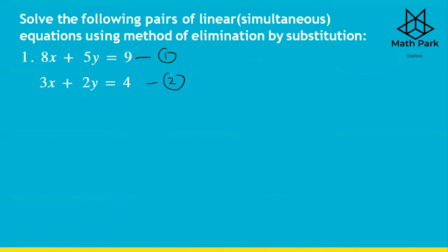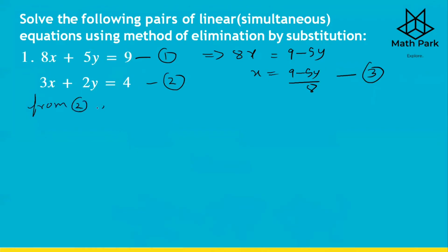When solving these equations, we find the value of x in terms of y from one equation and substitute it into the other. From equation 1: 8x + 5y = 9, we get 8x = 9 − 5y, or x = (9 − 5y) / 8. Let this be equation number 3. Now we substitute this value into equation 2.